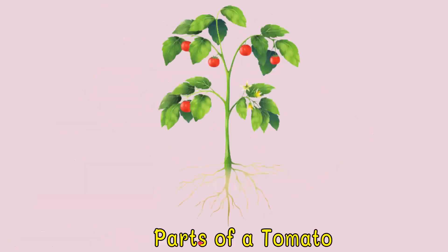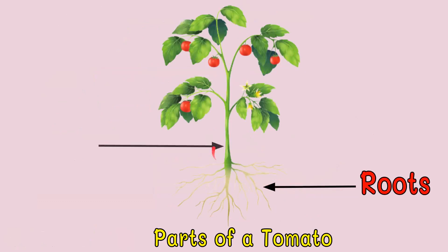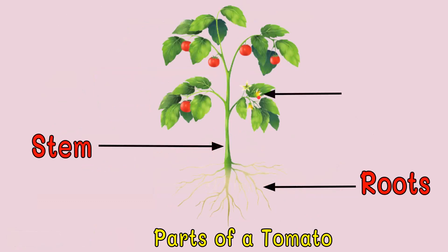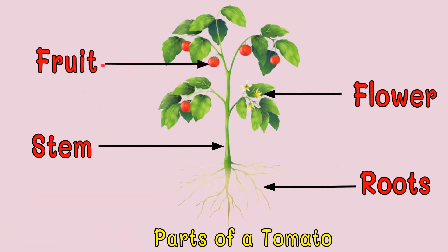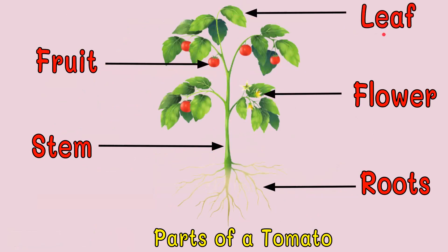Let's have the parts of a tomato. These are the roots. This one? Stem. This one? Flower. This one? Fruit. And the leaf. Let's name the different parts of a tomato once more: roots, stem, flower, fruit, and leaf.